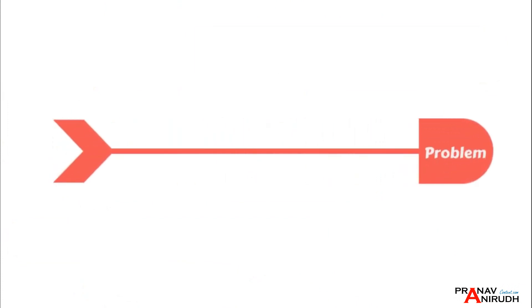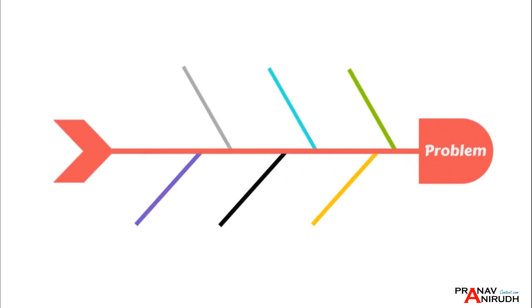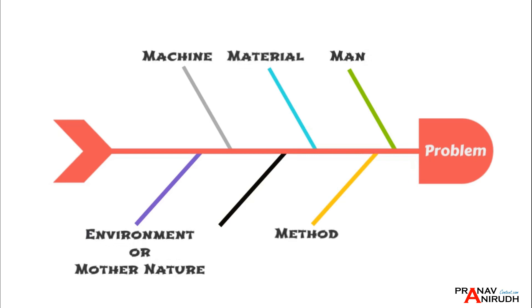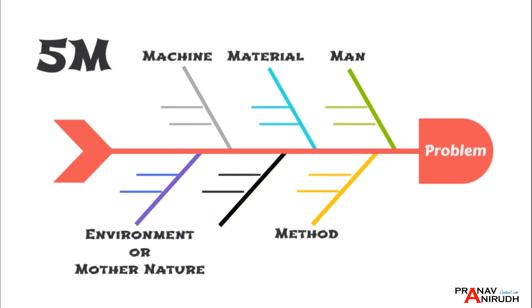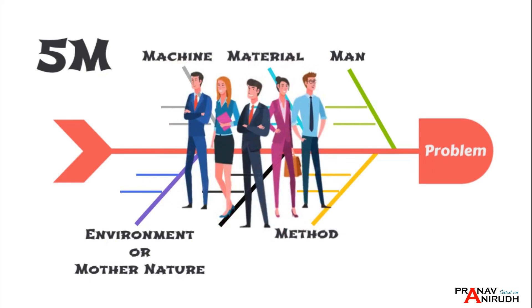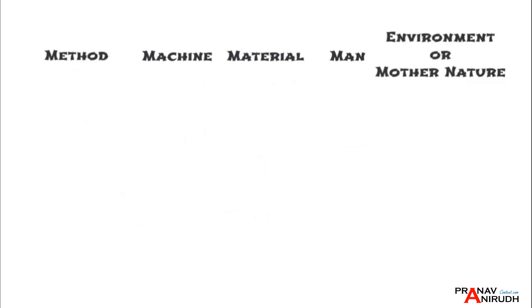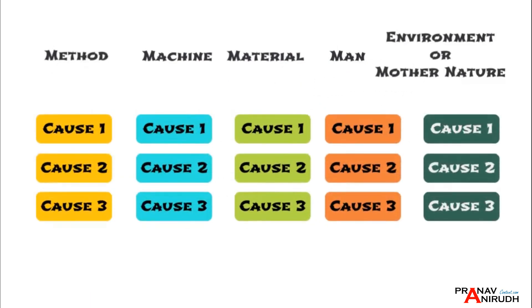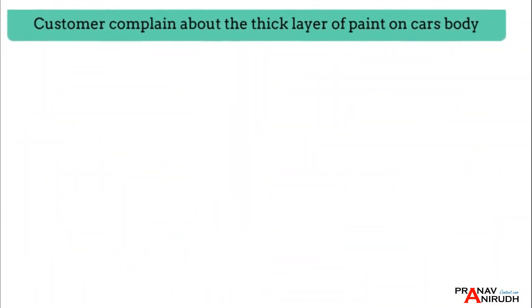There are four steps to create an Ishikawa diagram. In the first step, clearly define the problem that needs to be analyzed. The second step is to determine the main categories that may contribute to the problem, such as Man, Material, Machine, Method, and Environment — these major categories can be remembered as the 5M. In the third step, each category is brainstormed; it is important to involve relevant stakeholders to ensure a comprehensive view of the problem. In the final step, the root cause is investigated.